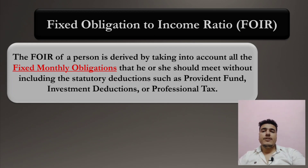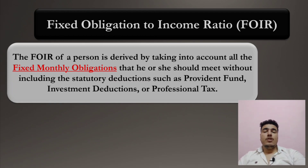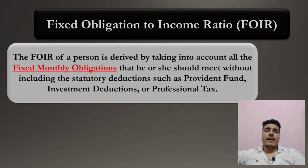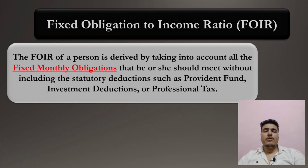To calculate Fixed Obligation to Income Ratio, you first need to calculate your fixed monthly obligations. Fixed monthly obligations include whatever you pay monthly — like rent, which is fixed, and EMIs, which are fixed. However, you must exclude provident fund contributions, investment deductions like LIC premium payments, professional tax, or any other kind of investment deductions. You include only obligations.